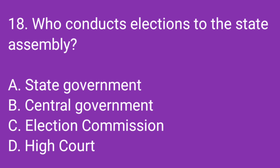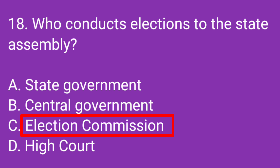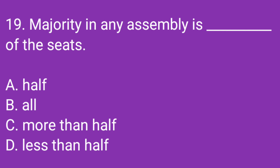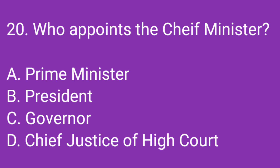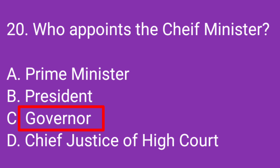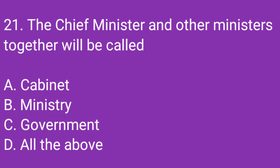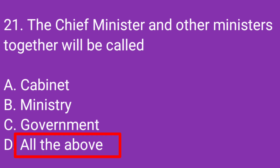Question number 18: Who conducts elections to the state assembly? Correct answer: Election Commission. Question number 19: Majority in any assembly is dash of the seats. Correct answer: More than half. Question number 20: Who appoints the Chief Minister? Correct answer: Governor. Question number 21: The Chief Minister and other ministers together will be called? Correct answer: All the above — Cabinet, Ministry, Government.